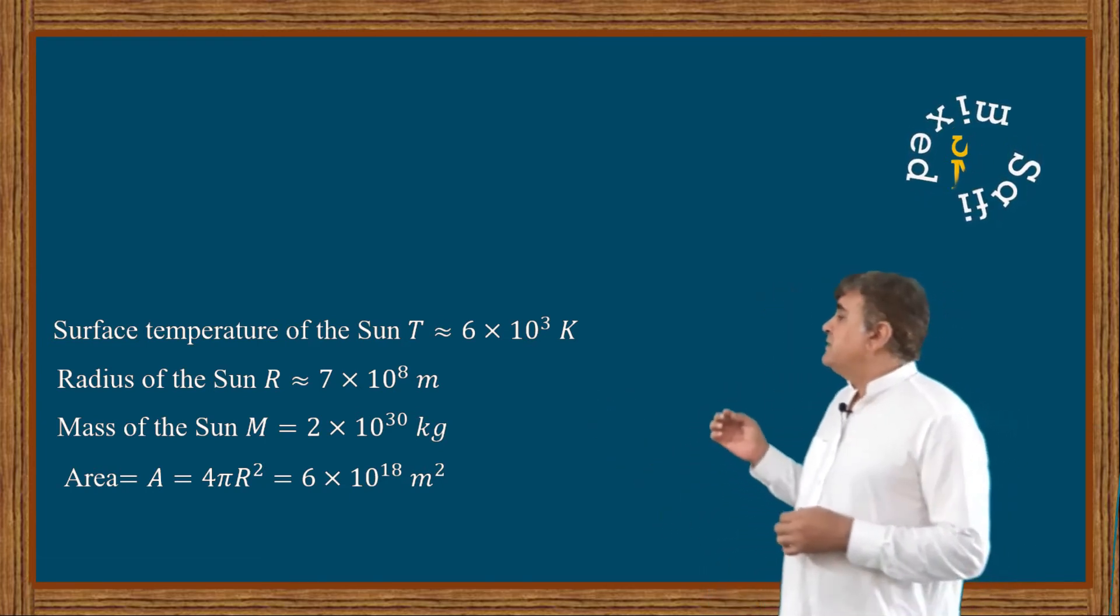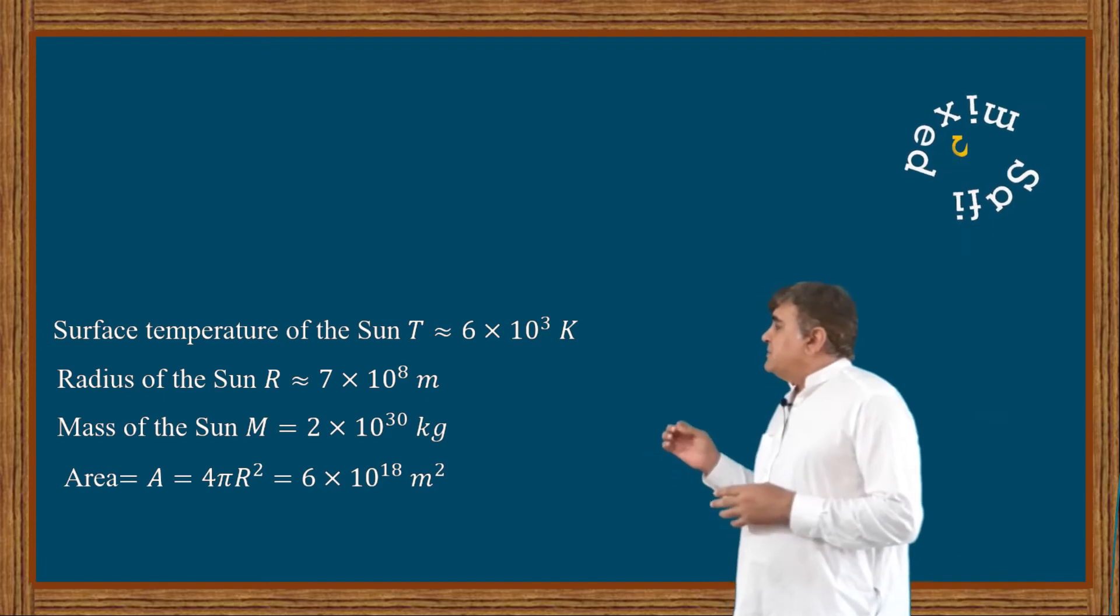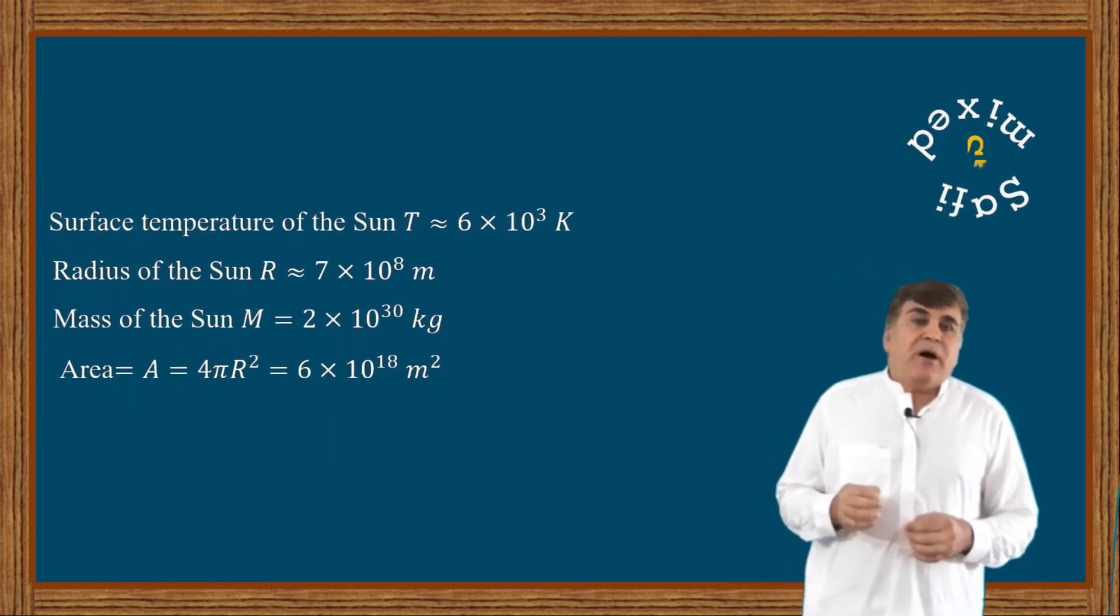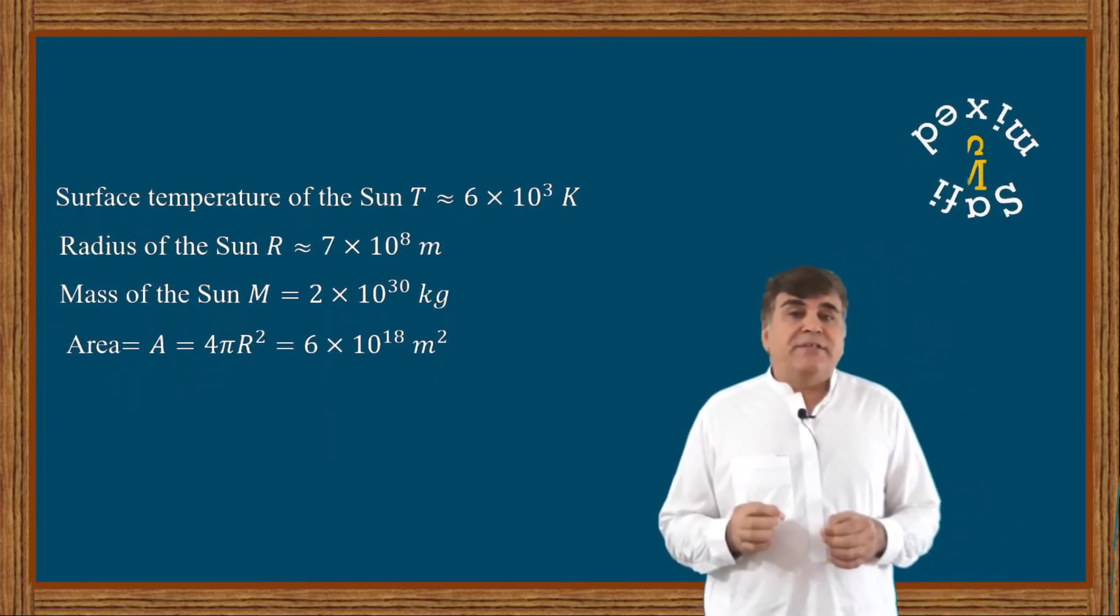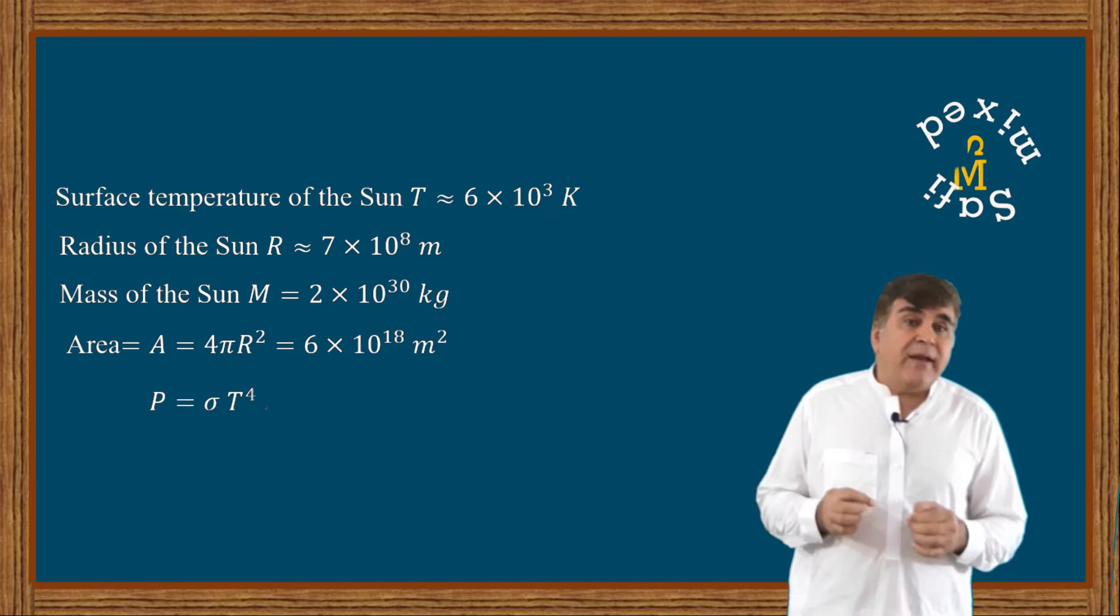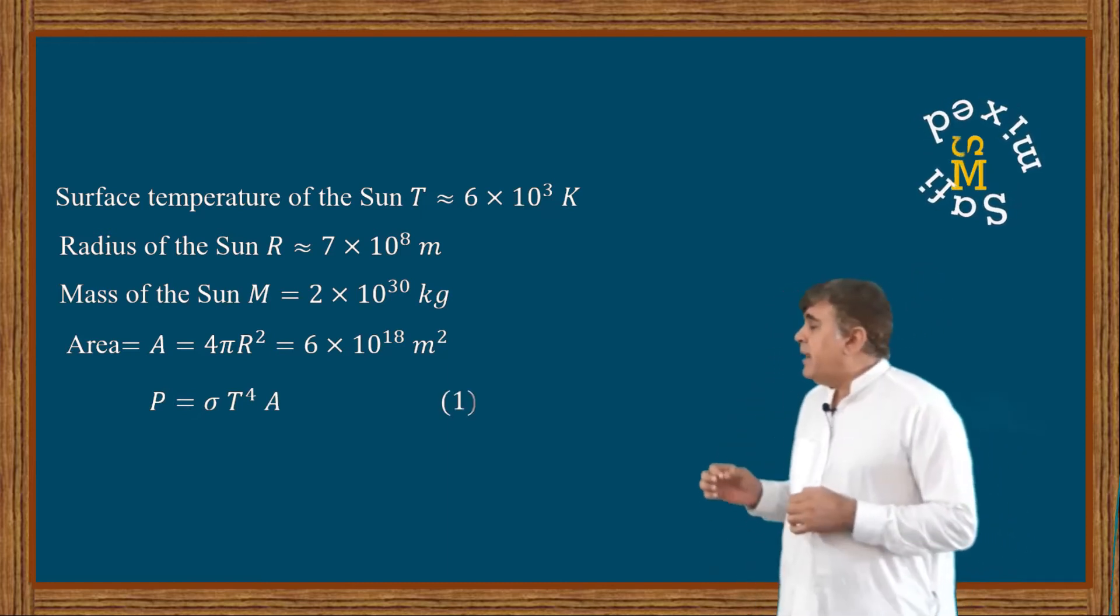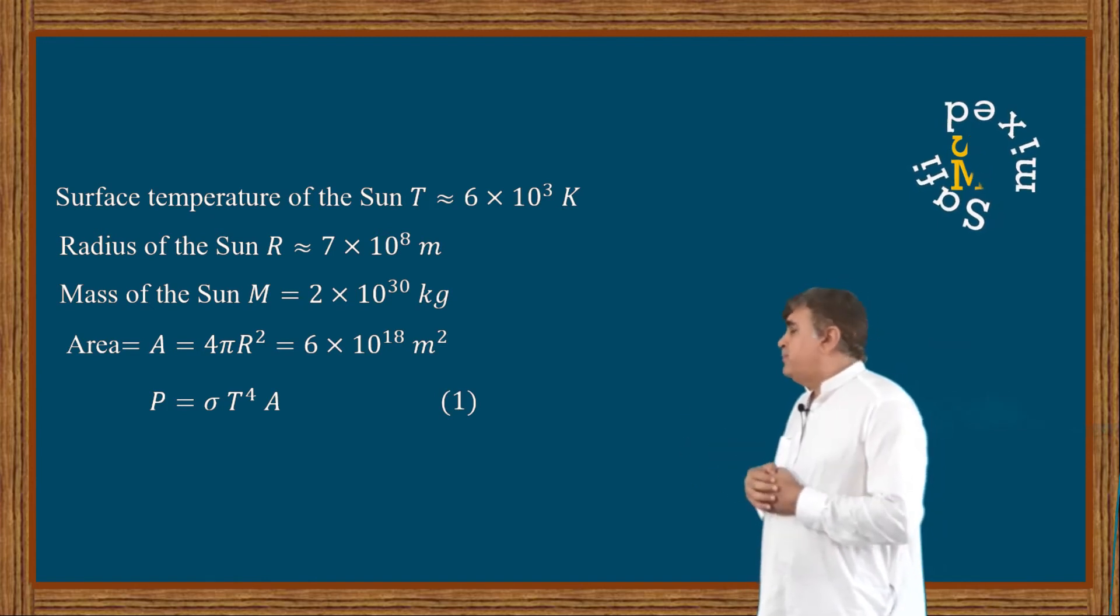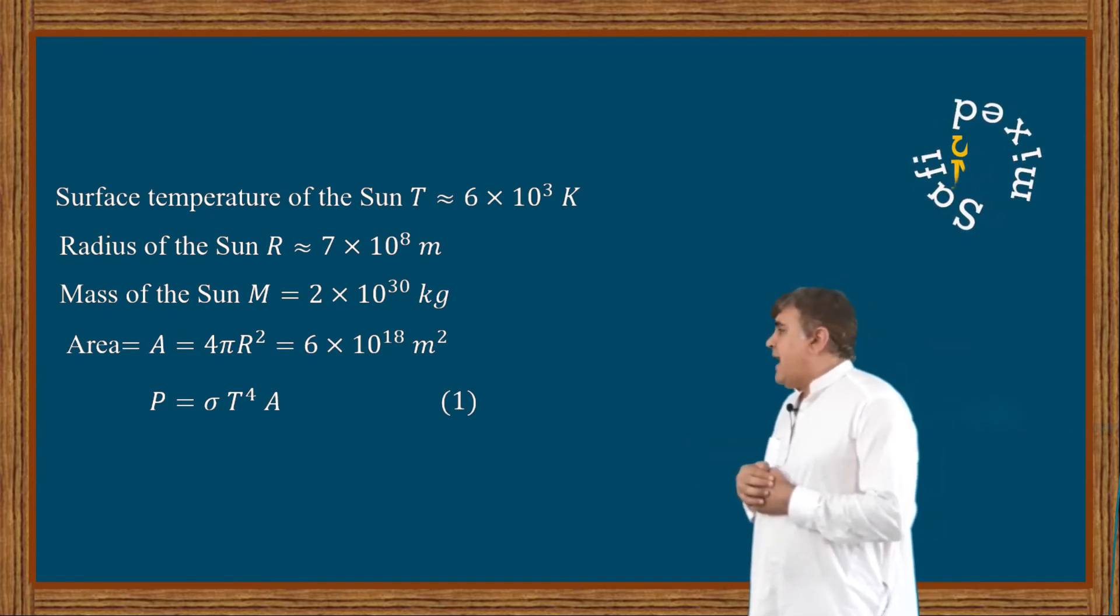The power of the Sun can be calculated by using Stefan-Boltzmann law given by P = σT⁴A, where σ is Stefan-Boltzmann constant whose value is 5.67 × 10⁻⁸ J·s⁻¹·m⁻²·K⁻⁴.